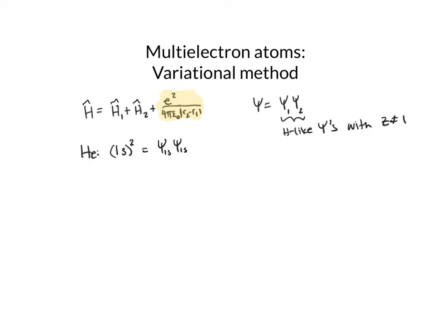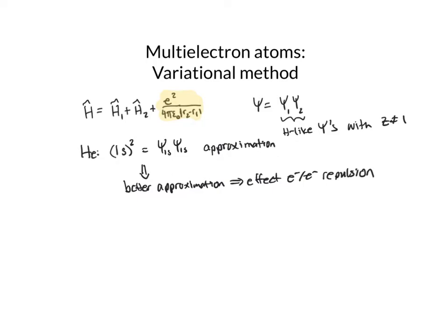That is the solution to this Hamiltonian if I ignore electron-electron repulsion. So since this would be the solution without electron-electron repulsion, this is our first approximation for the overall wave function of my helium atom. What I want to do is get a better approximation by adding back in the effect of the electron-electron repulsion. In order to do that, I am going to use the variational method as an approximation method.